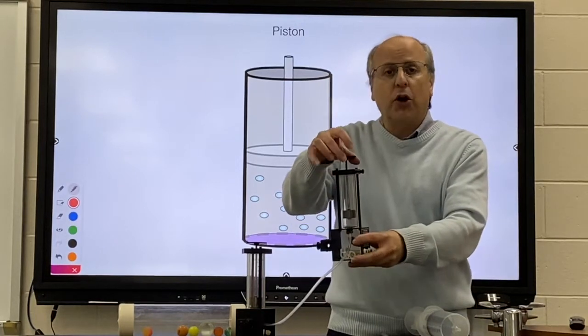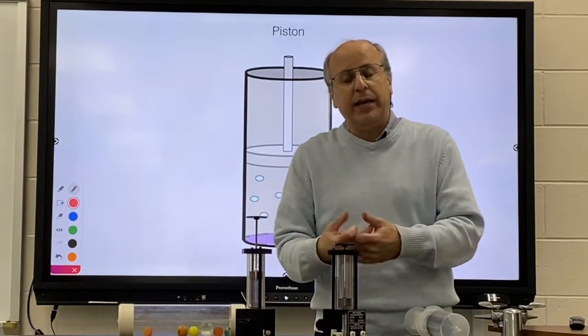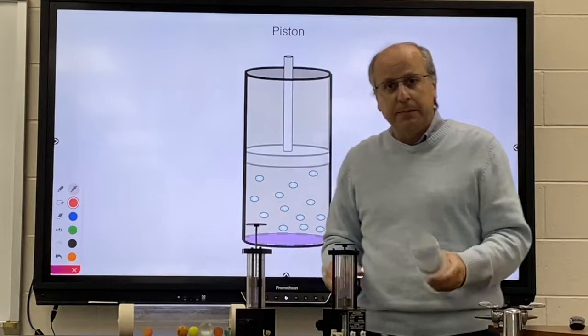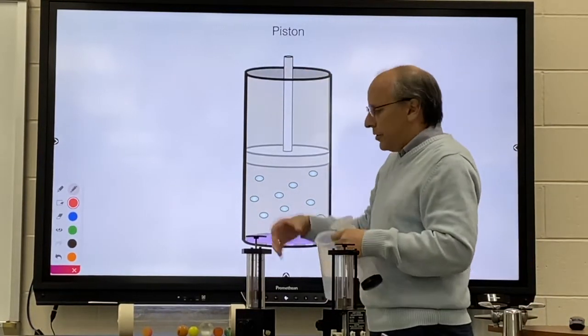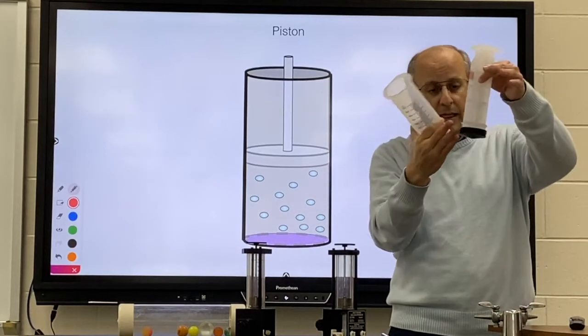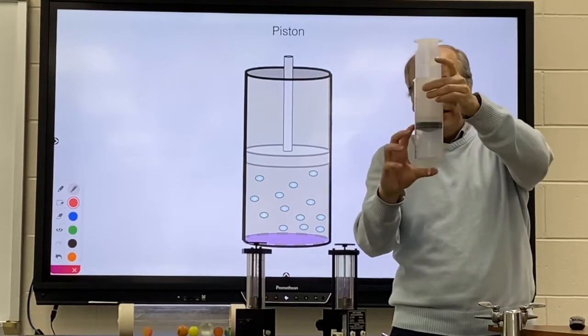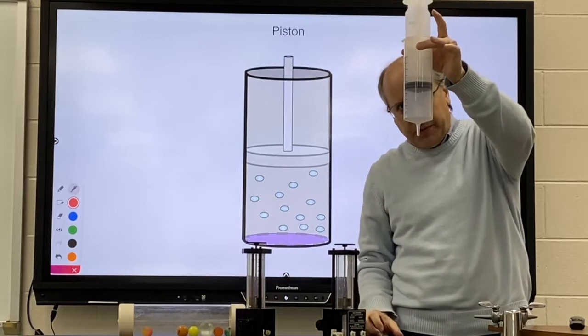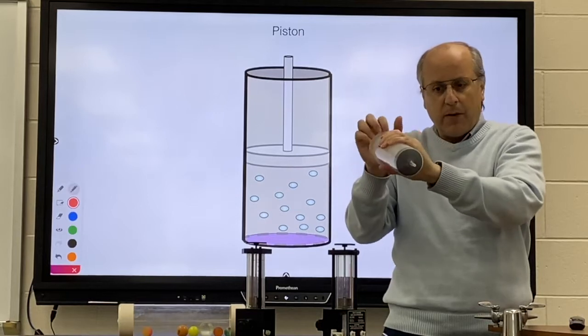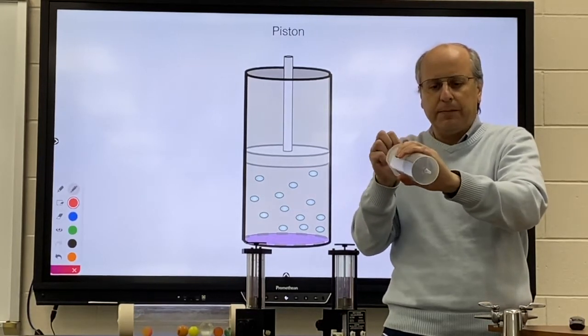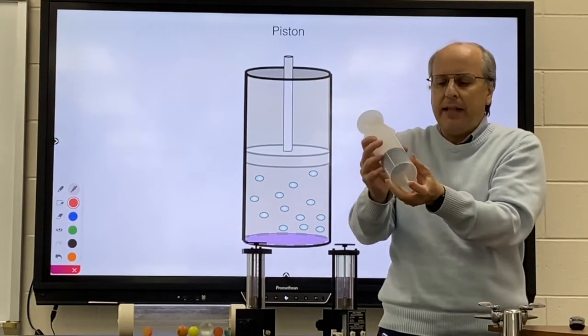Today our focus is going to be on these things—they're called pistons. I want to make sure you know what a piston is, how it works, and some of the ways we use this in things like our car engine. With your piston, you generally have a cylinder that the piston is placed in. This is the actual piston, this is the cylinder, and this is the chamber where the gas will be found.